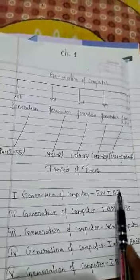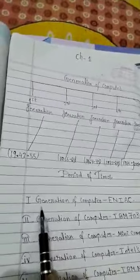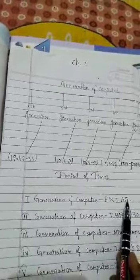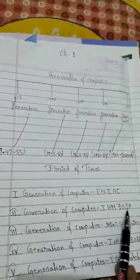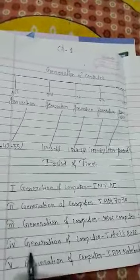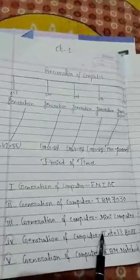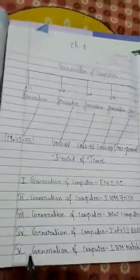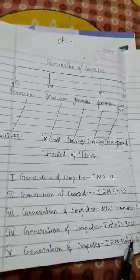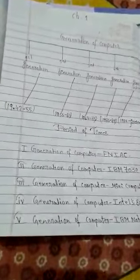Here are some example computer names related to each generation. The 1st generation computer is ENIAC. The 2nd generation is IBM 7030. The 3rd generation is the minicomputer. The 4th generation is the Intel 8088. And the 5th generation is the IBM notebook. I hope you understood this class. Please read your chapter in your book. Thank you, have a nice day.